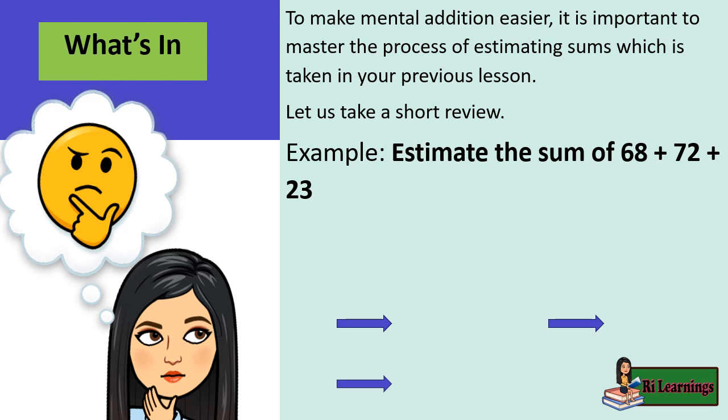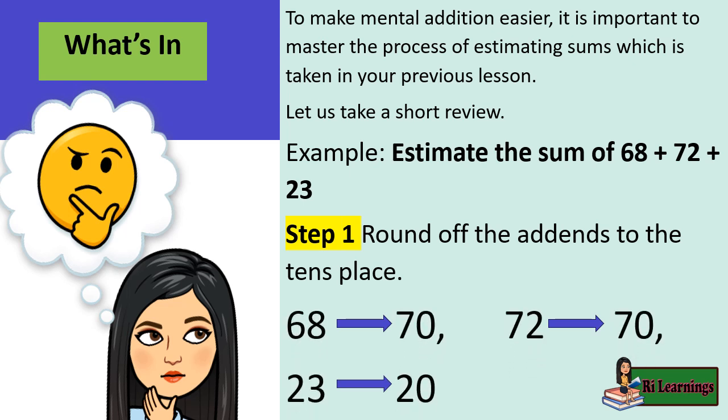Example: Estimate the sum of 68 plus 72 plus 23. Step 1, round off the addends to the tens place. 68 will become 70, 72 will become 70, 23 will become 20.